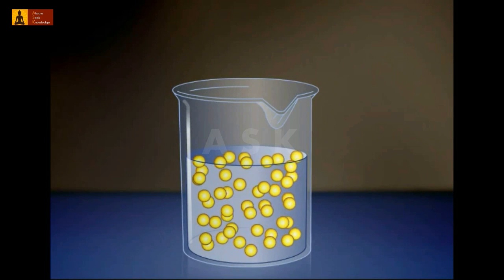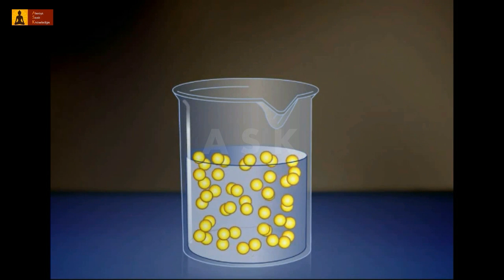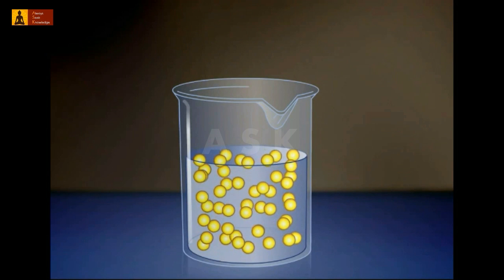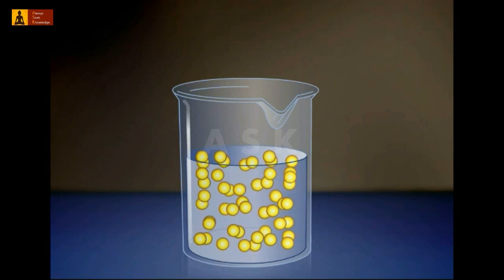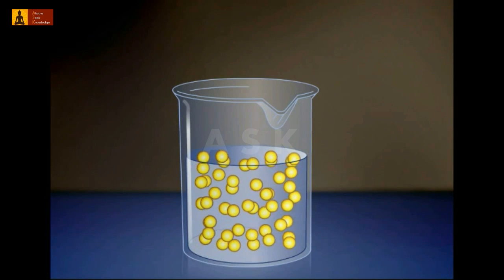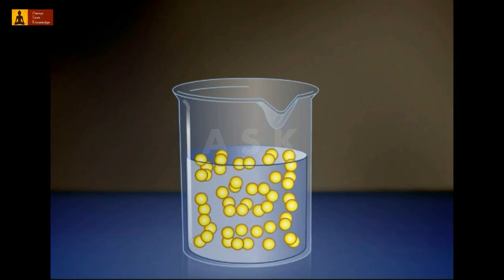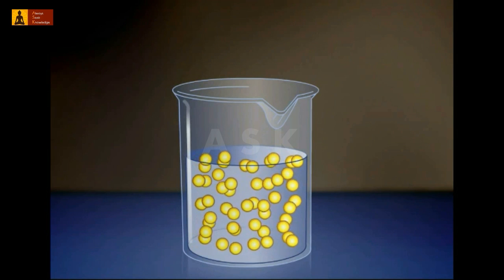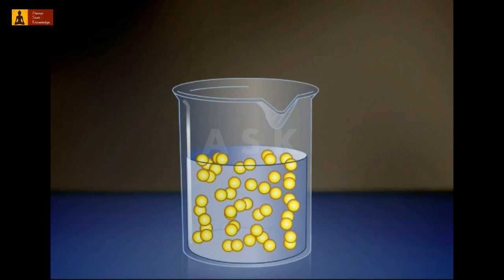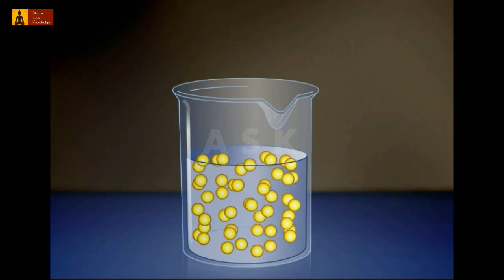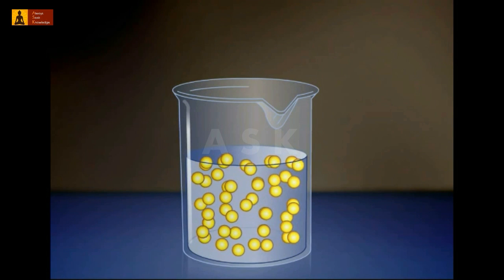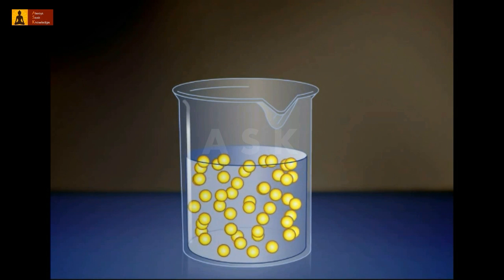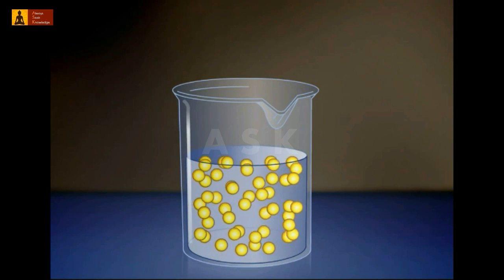Molecules dissolved in a solution are in constant random motion due to their kinetic energy. One result of this motion is that dissolved molecules become evenly distributed throughout the solution. This tendency of molecules to spread out is an example of diffusion. But how do these molecules come to be evenly distributed?